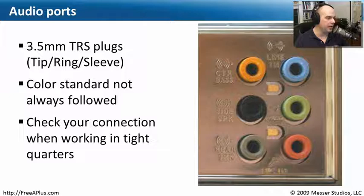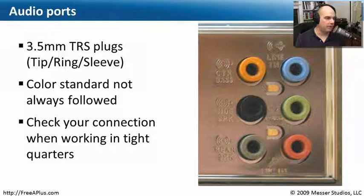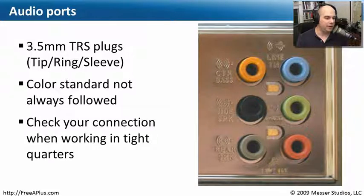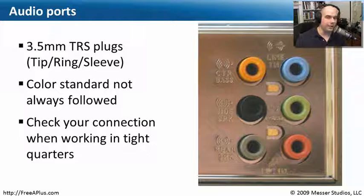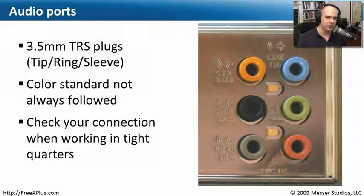Let's start with audio ports. Audio ports are pretty easy to find because they're these 3.5 millimeter plugs — what we call tip ring sleeve plugs, or TRS plugs. Very often we'll just refer to them as audio plugs, an eighth inch plug, or a 3.5 millimeter plug. They're all the same thing. You'll sometimes see them referred to as TRS connections, but very rarely — it's usually only on a description page for a cable.